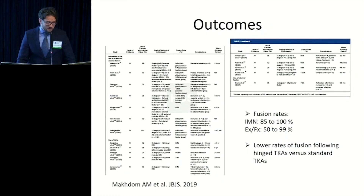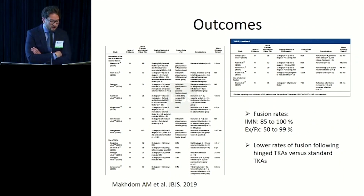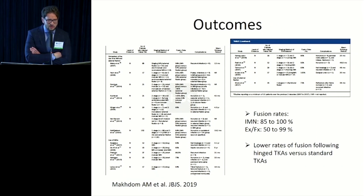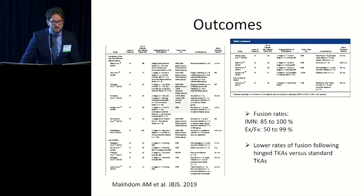In a systematic review of outcomes, the IM nail achieves higher fusion rates. Lower fusion rates are expected when managing hinged knees or distal femur cases versus standard TKA — which makes sense.